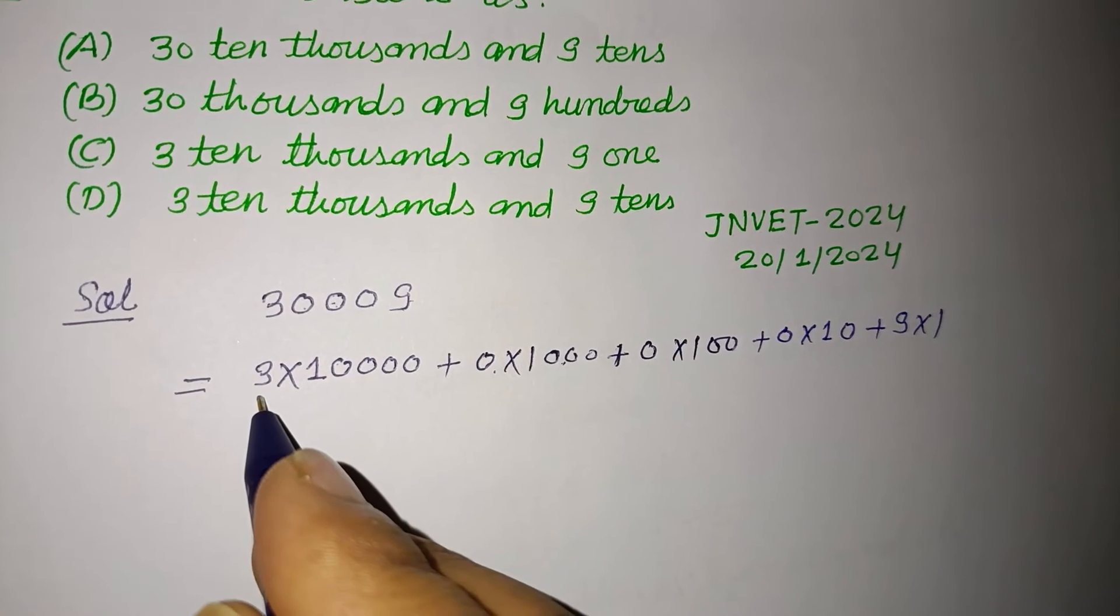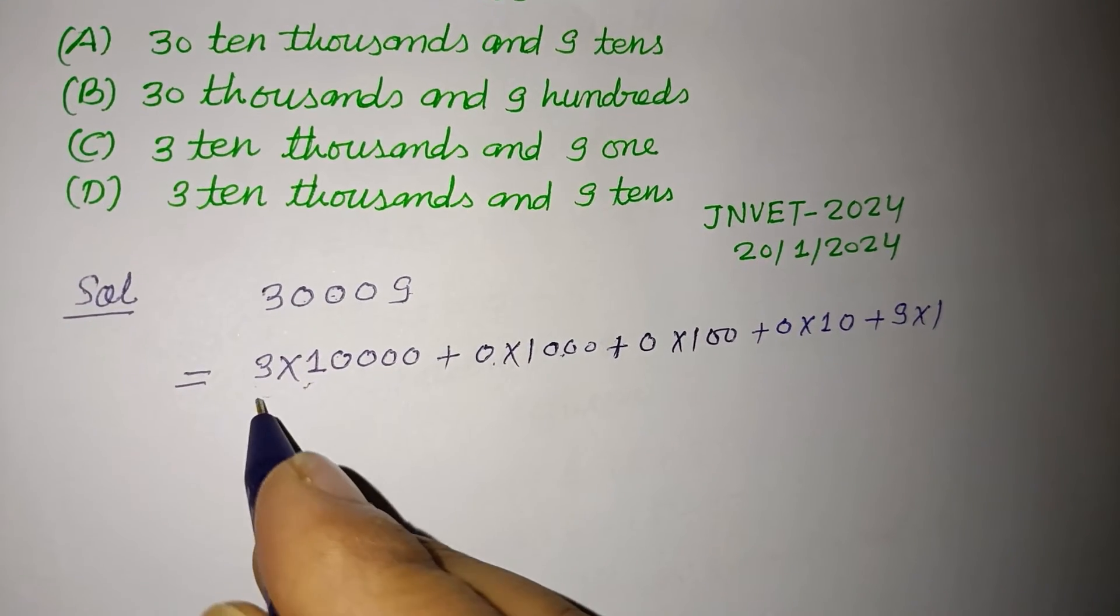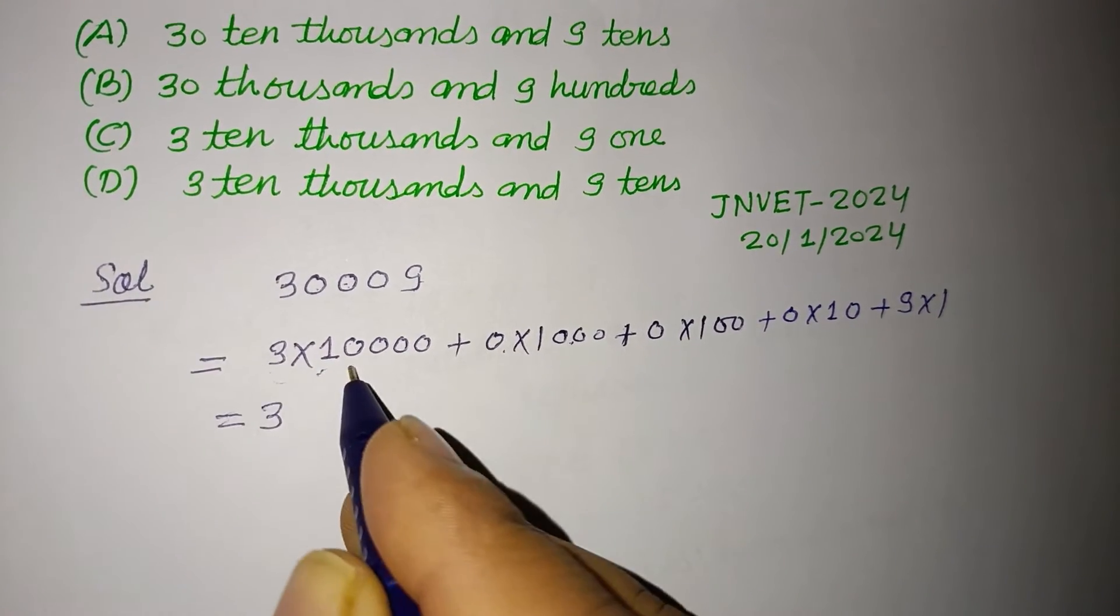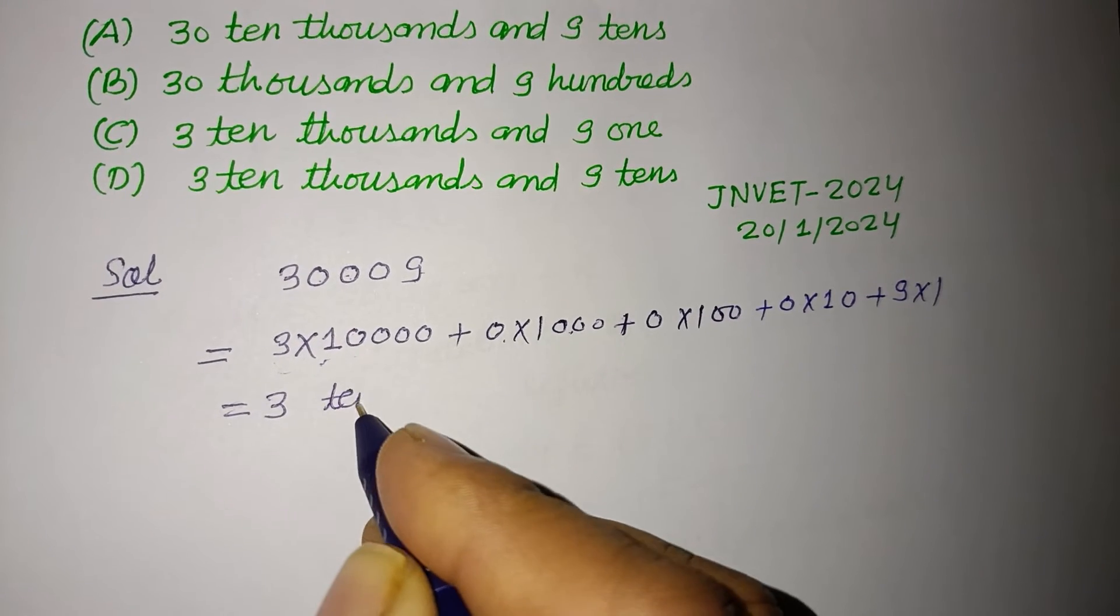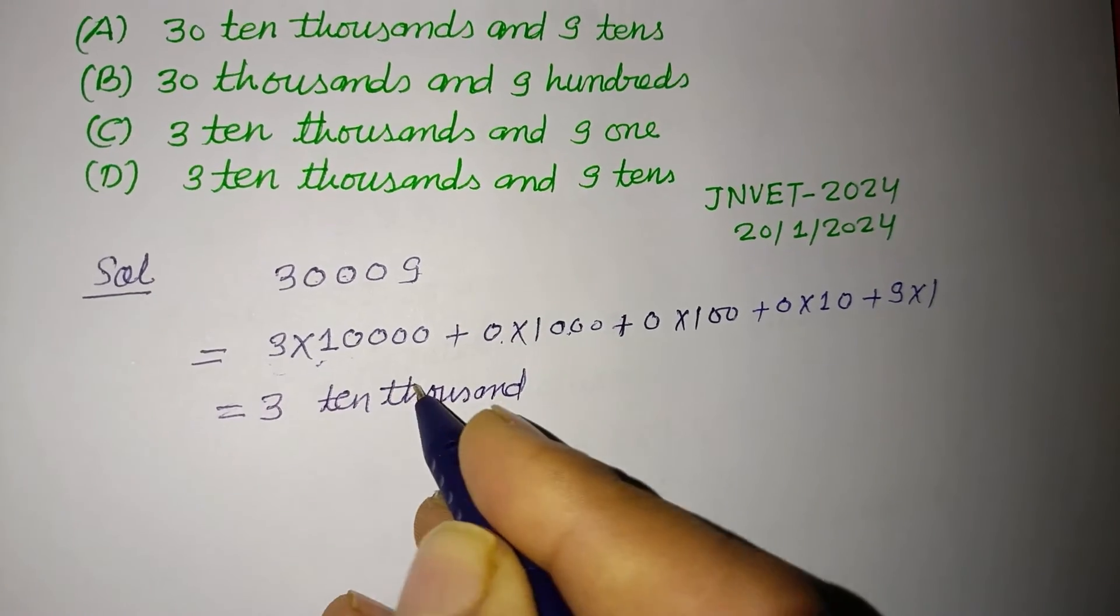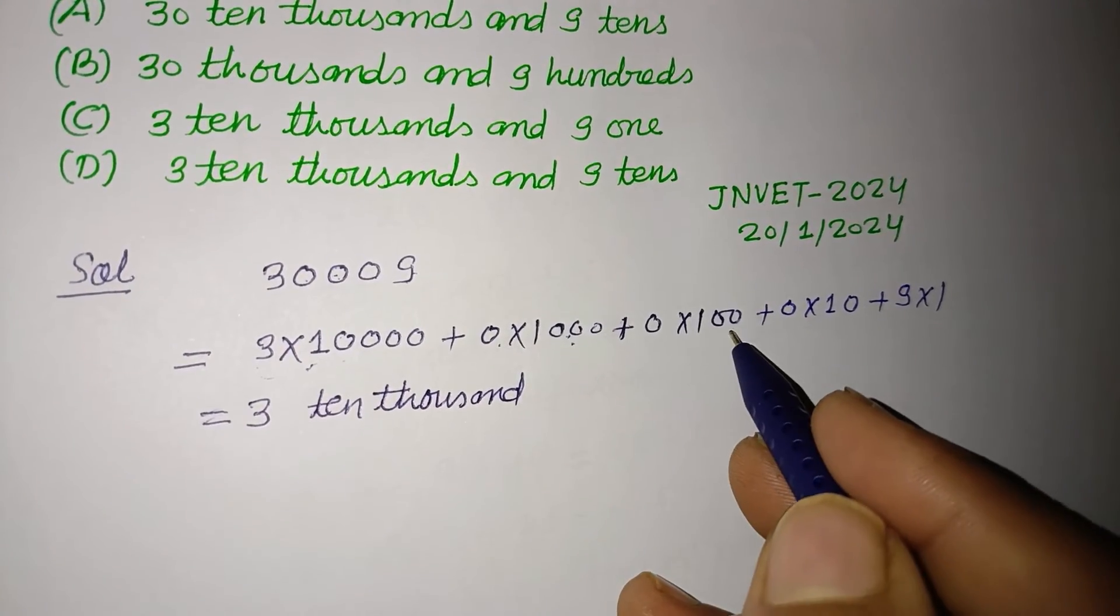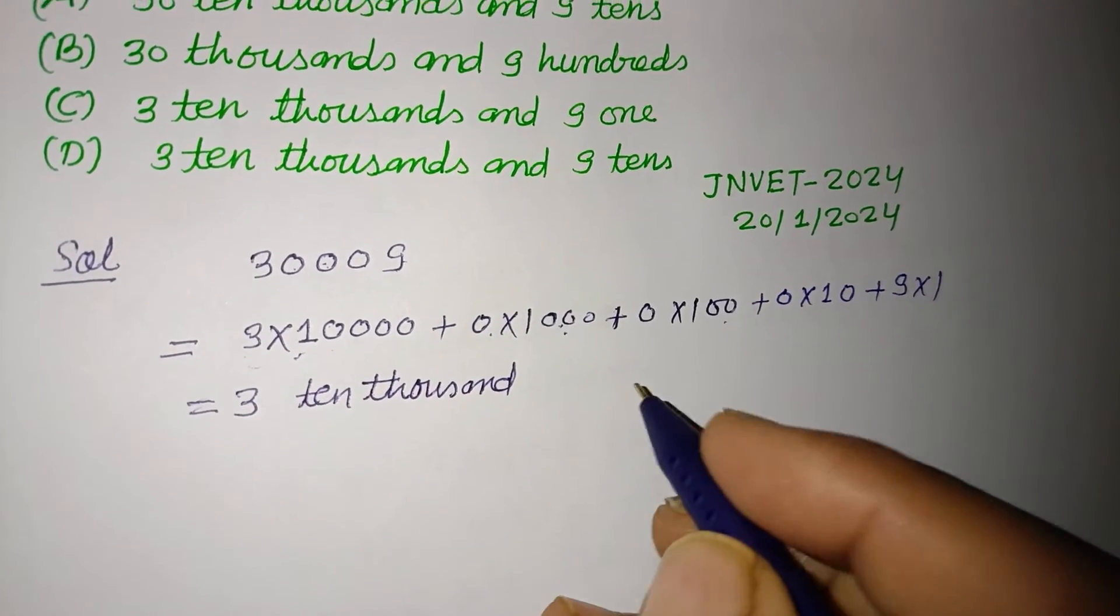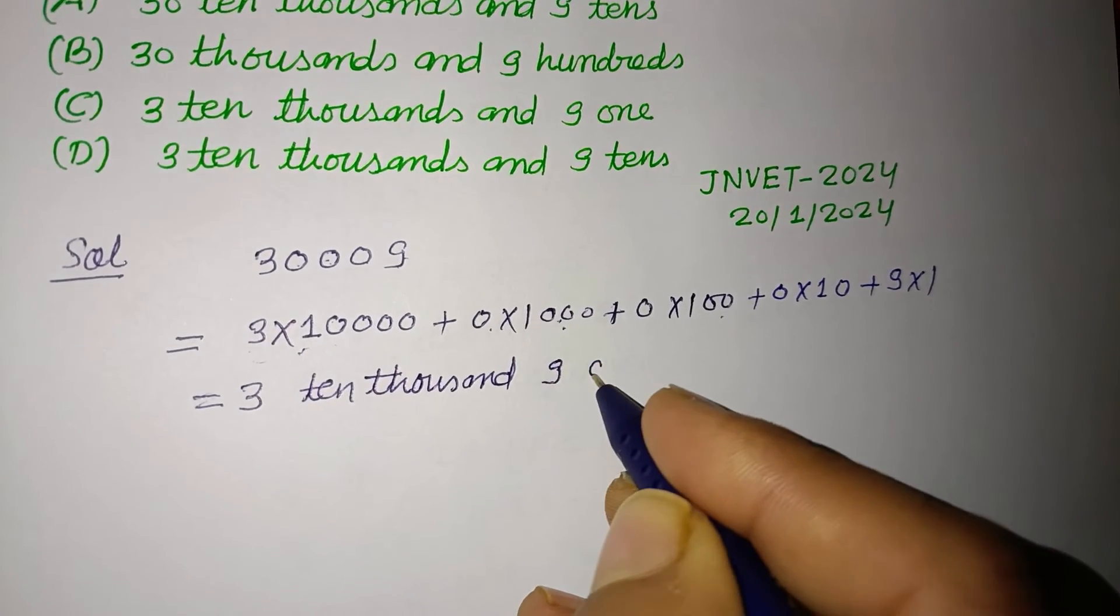So here is 3 ten thousand, 3 ten thousand and 1000 place is 0, 100 place is 0, 10 place is 0 and 9, 1.